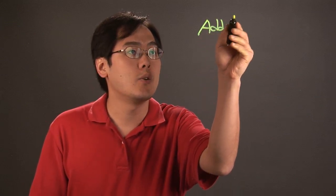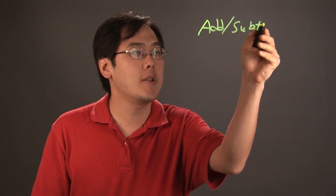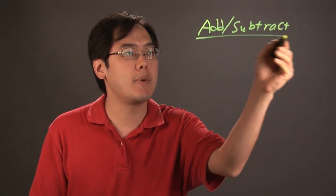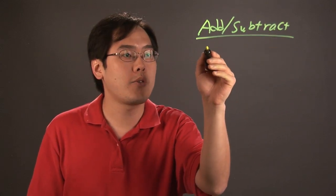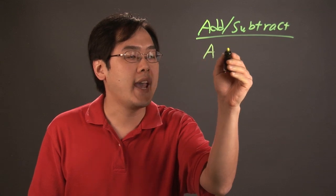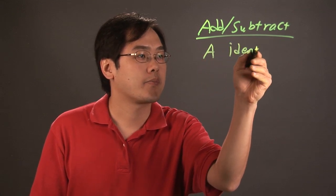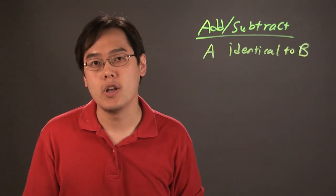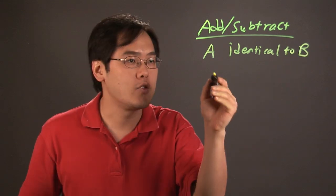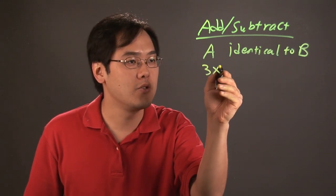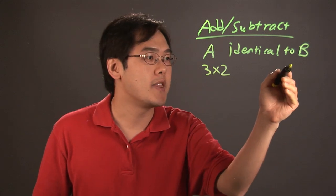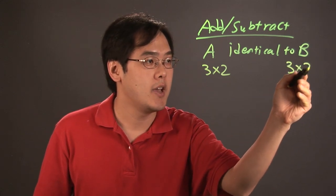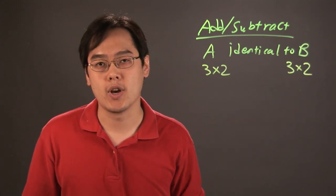When you add or subtract matrices, the one prerequisite to keep in mind is that matrix A is identical to matrix B in structure. In other words, if matrix A is 3 by 2—3 rows, 2 columns—then matrix B also has to be 3 rows and 2 columns.